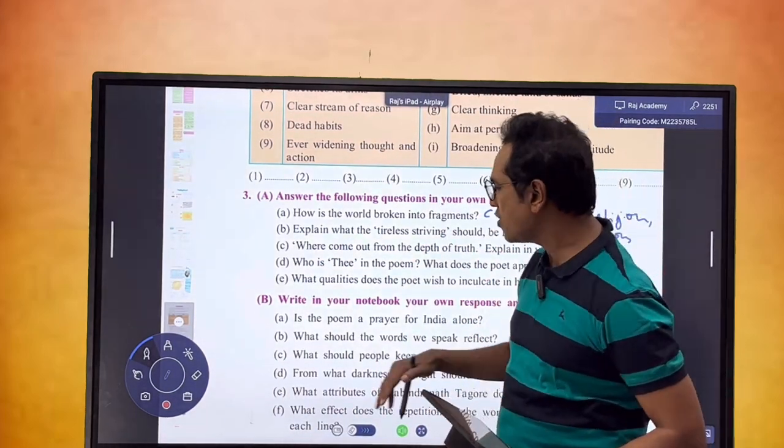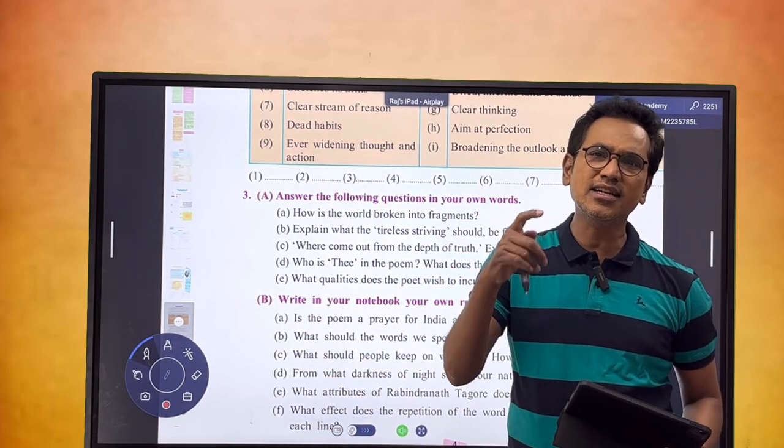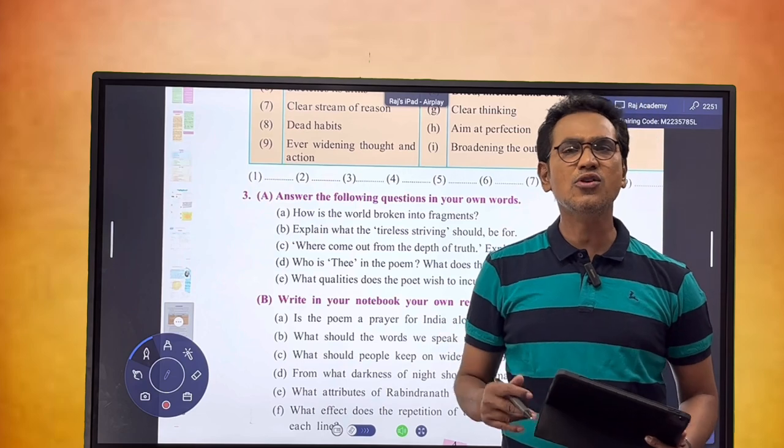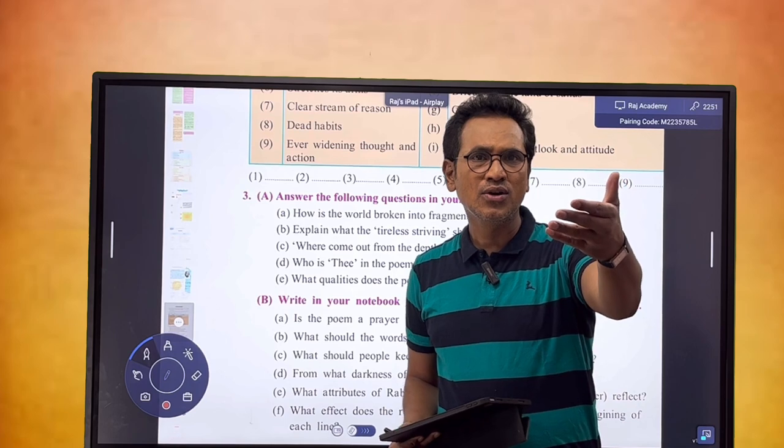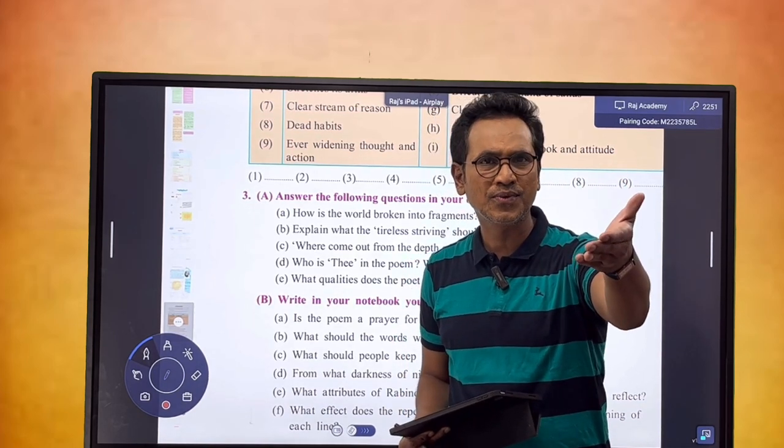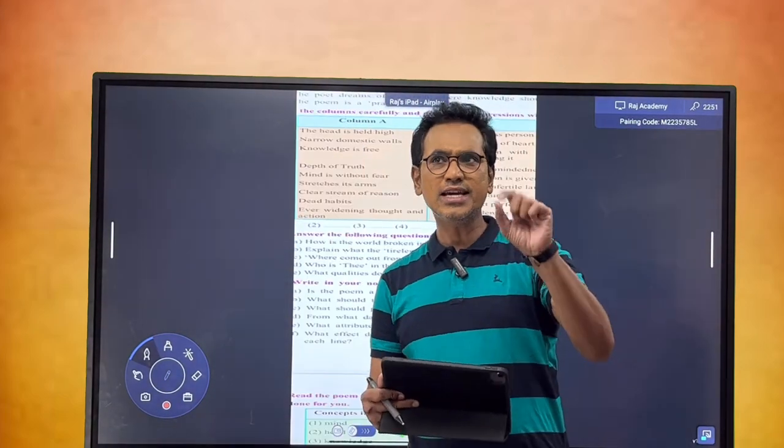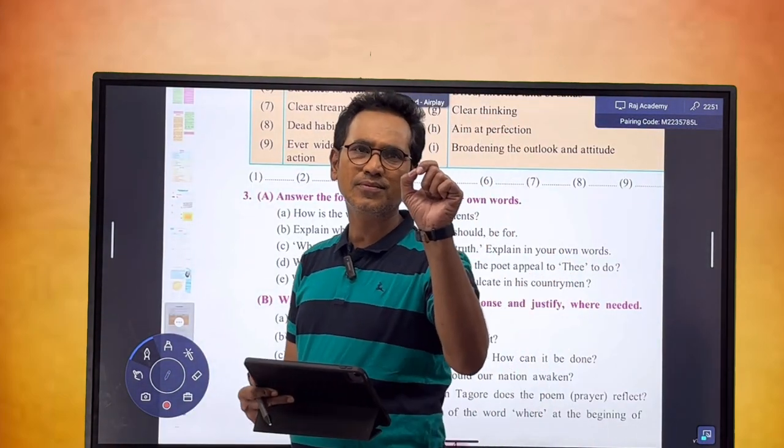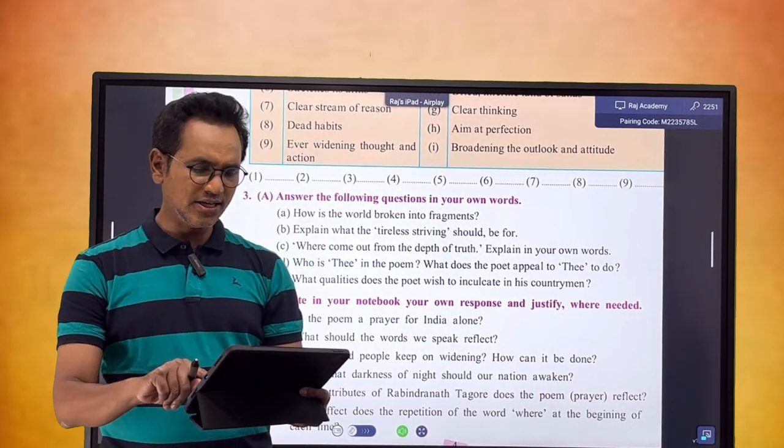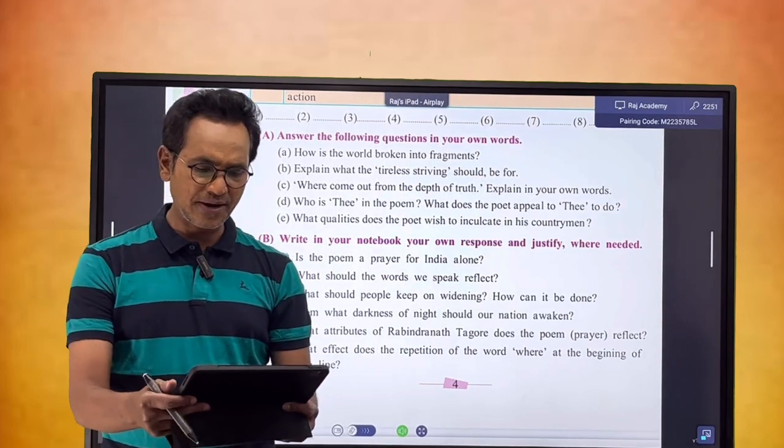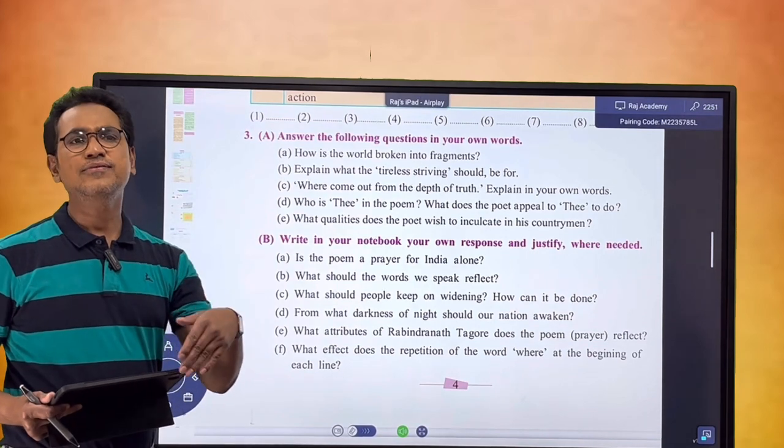This is the objective of literature education. To make your thinking clear, to broaden your outlook, to make you aware of certain things, to let you think correctly. Write in your notebook your own response and justify where needed. This is again self-response.